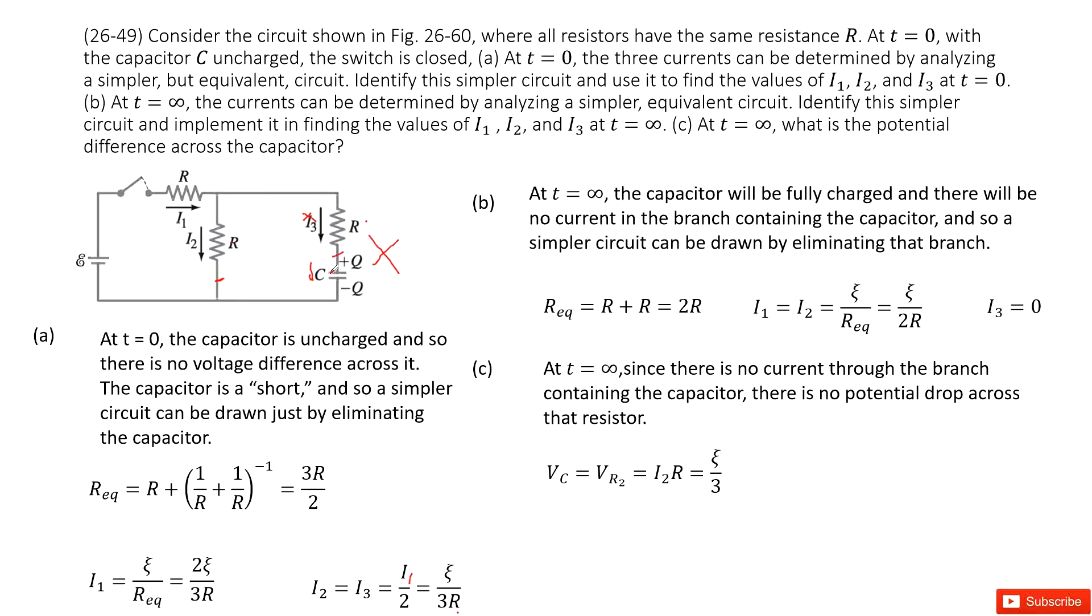So there is no current that goes through in these branches. So we look at this one. The equivalent resistance is just R1 plus R2, series connection, 2R. So we can say I1 equal to I2 equal to the EMF divided by equivalent resistance. So epsilon divided by 2R and I3 is 0.